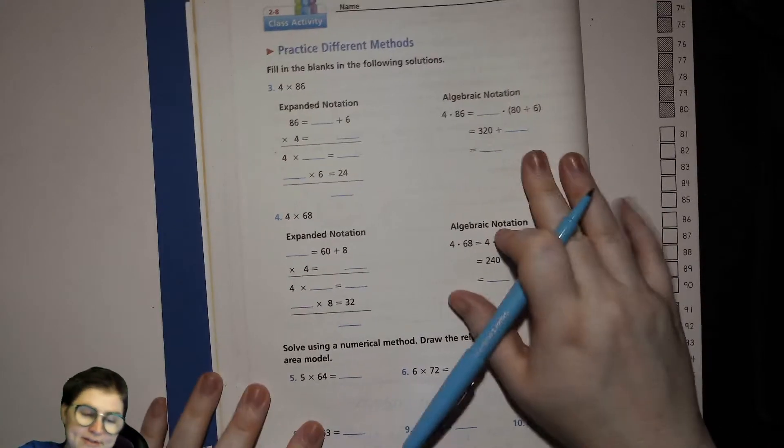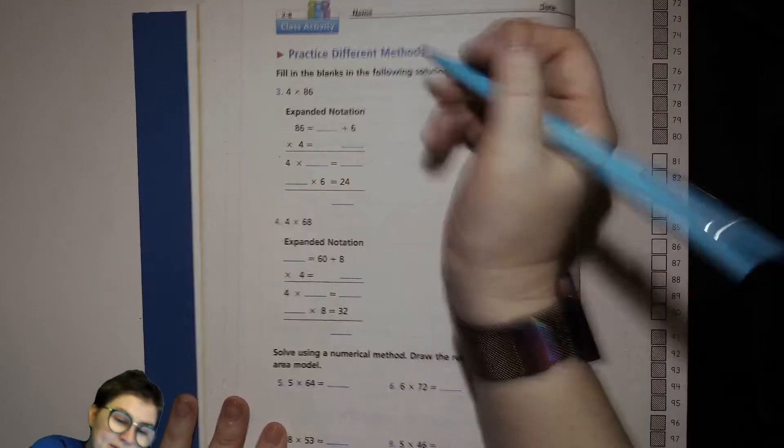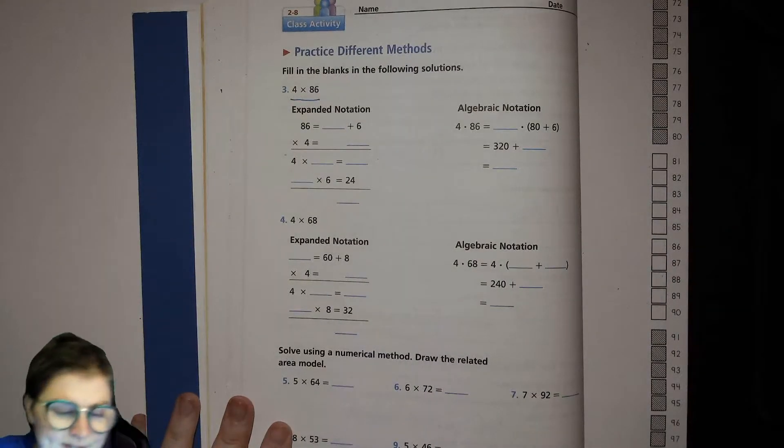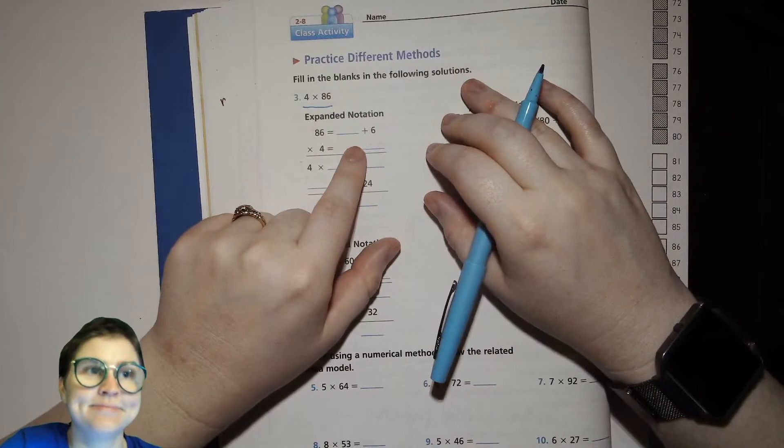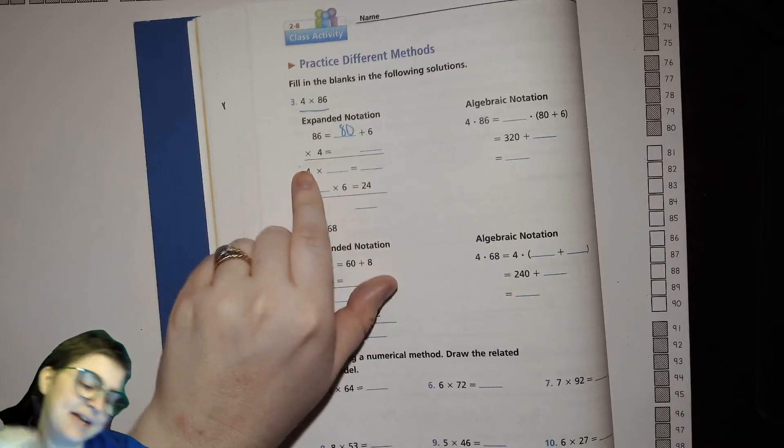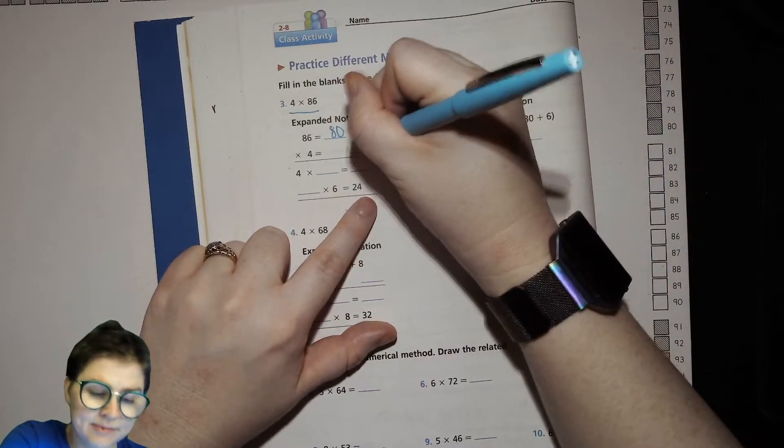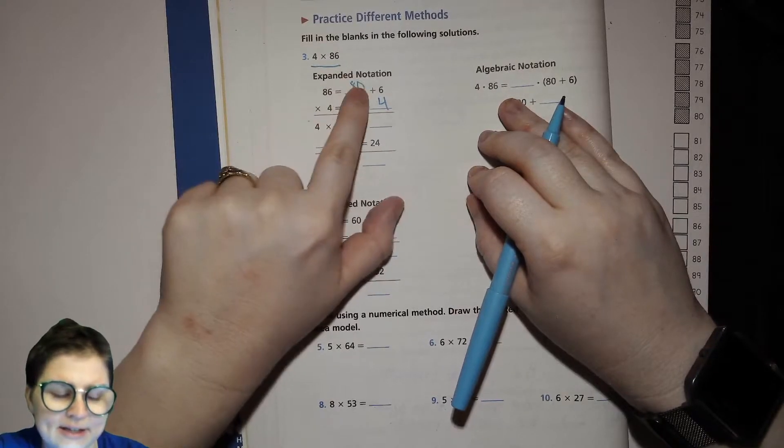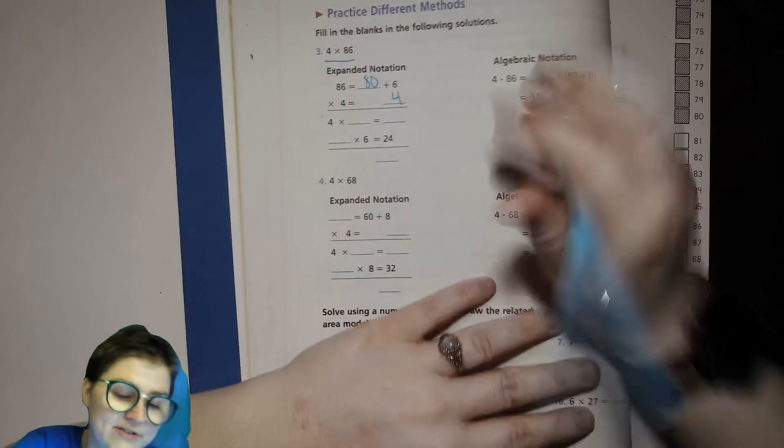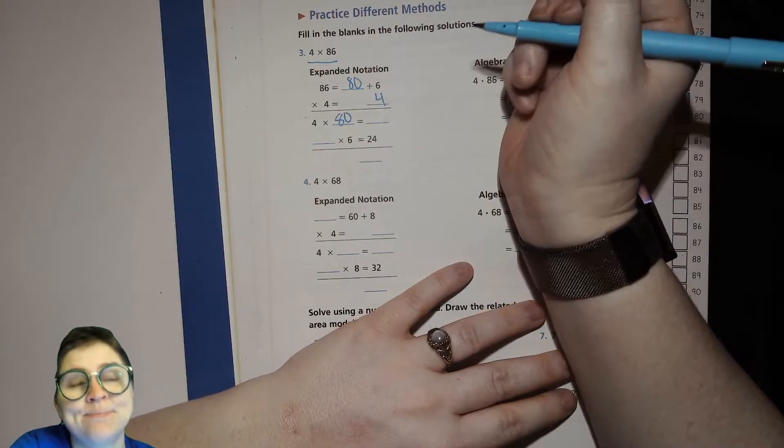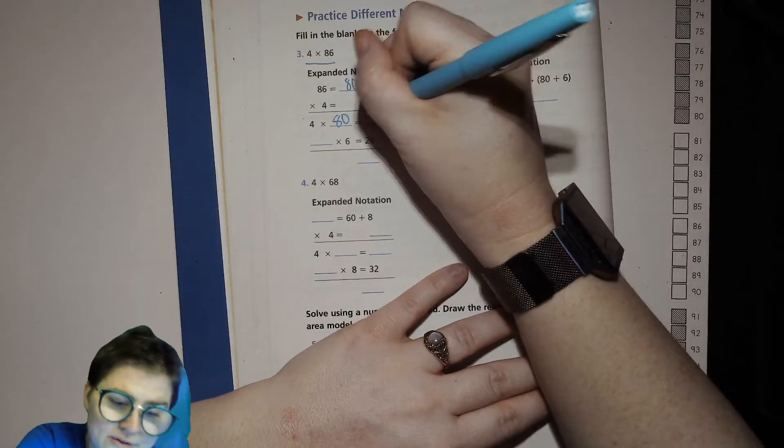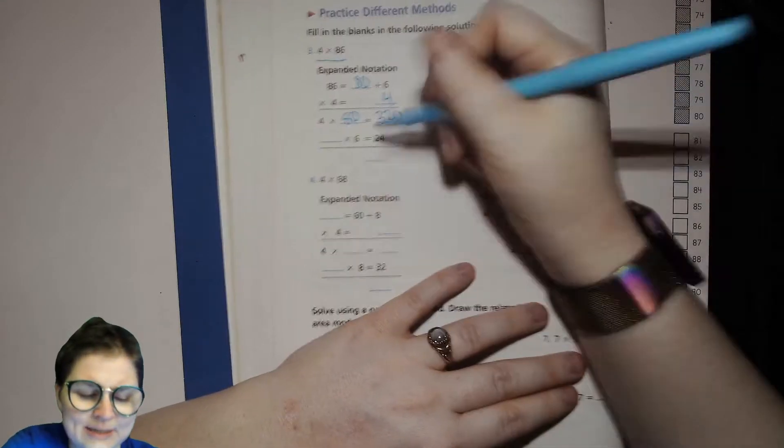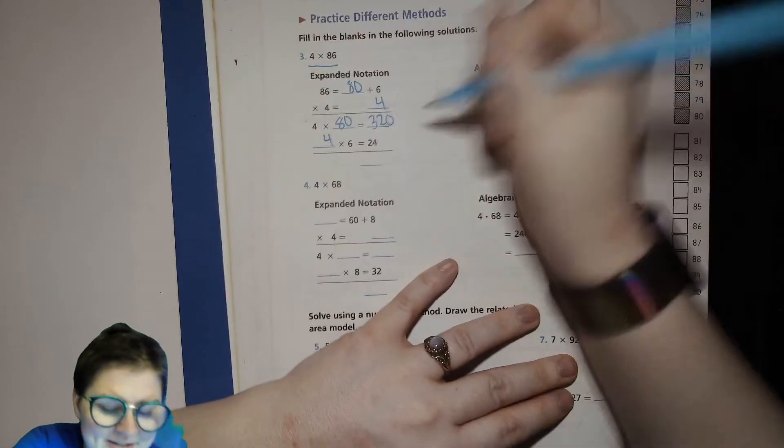Now we will practice each of those methods filling in the blanks. So let's take a look at number three. We're dealing with 4 times 86. Doing that with expanded notation, we're turning 86 into something plus 6. What's the something? It's 80, right. 80 plus 6 is 86. Now the first thing we'll multiply is 4 times the larger place value, so 4 times 80. What's 4 times 8? 32. What's 4 times 8 tens? 32 tens, which is also known as 320. And then what times 6 is 24? It's the 4 times 6, right.